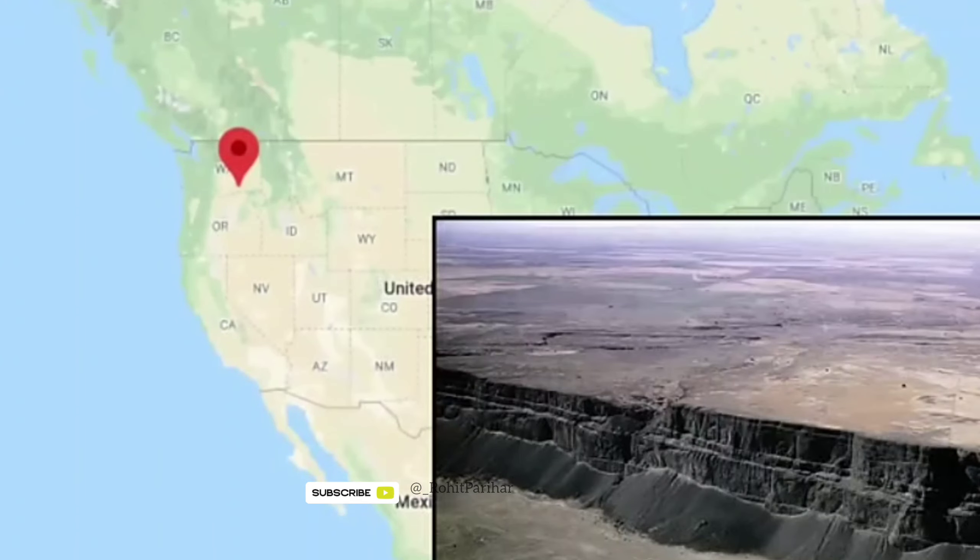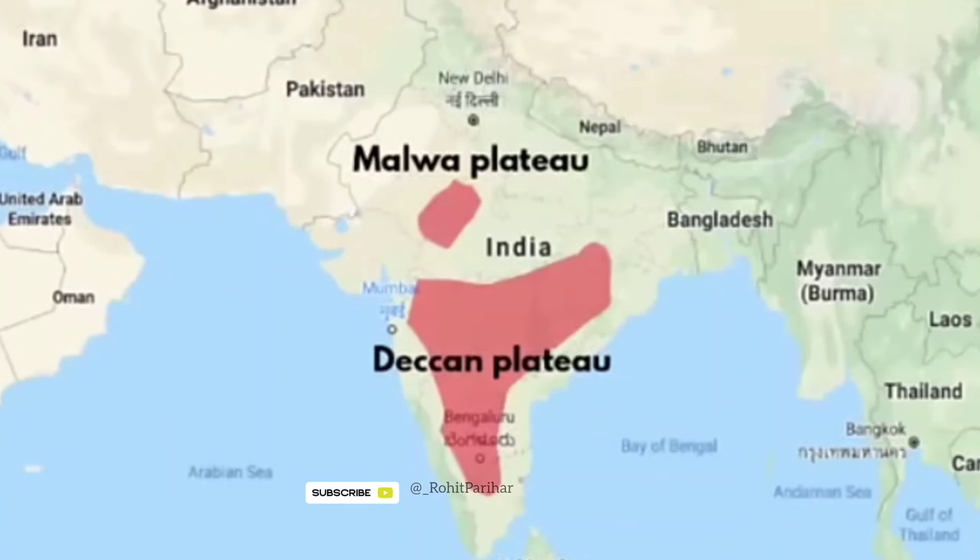For example, the Columbia Plateau. In India, the Malwa Plateau and the Deccan Plateau are of volcanic origin.